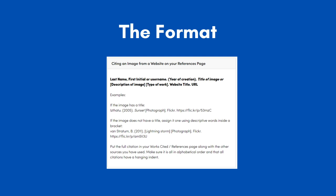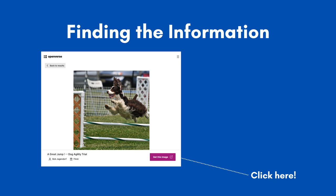For my example, I will have an image with a title. After that, indicate if it is a photograph or a digital image. My picture is a photograph. After that, show where you got the picture and then provide a URL to it. The easiest way to find all of this information is to click on the button that says "Get this image" when you find it in OpenVerse.